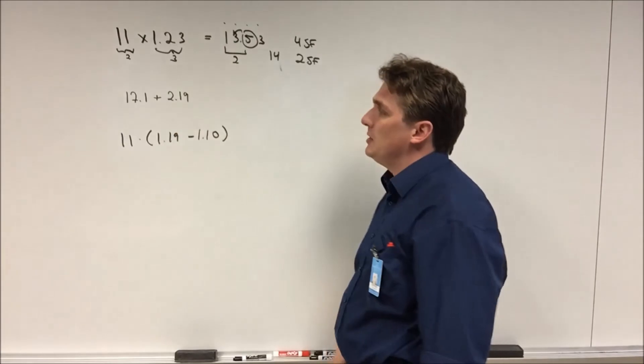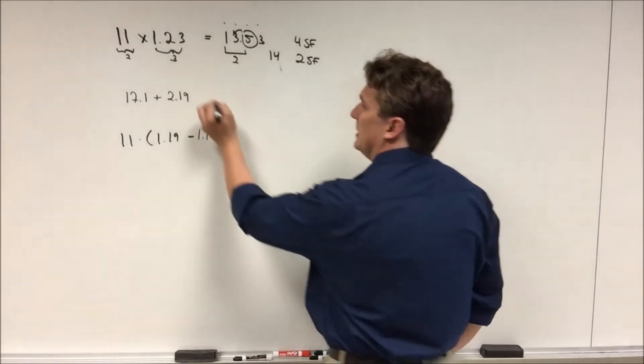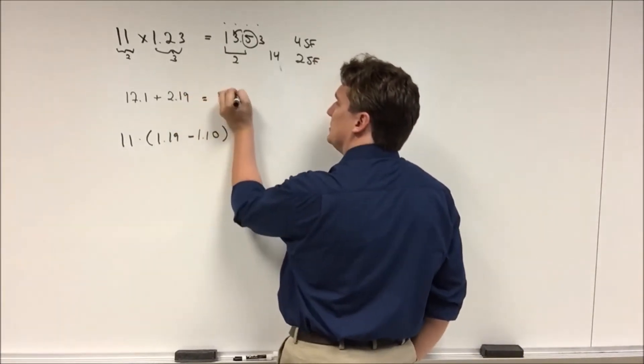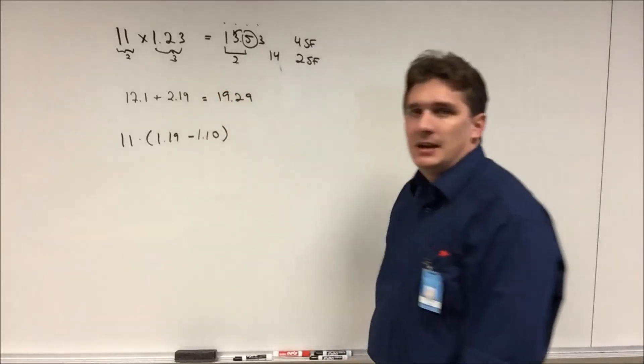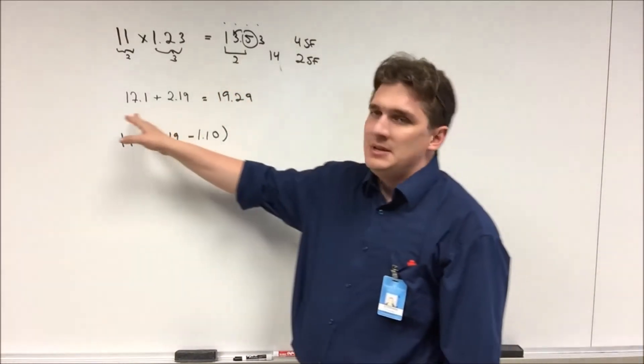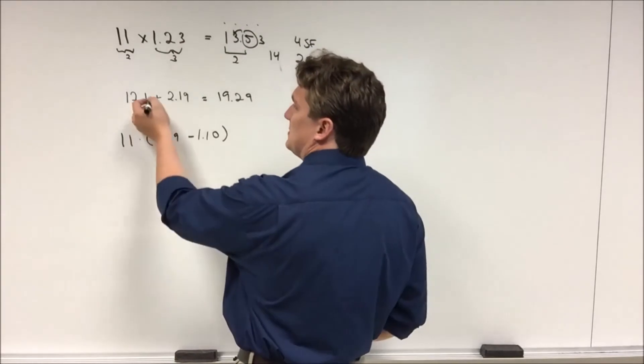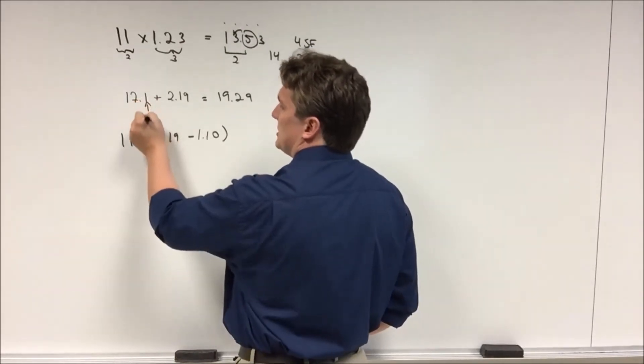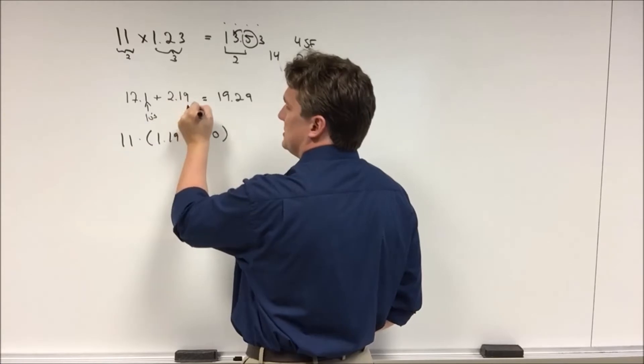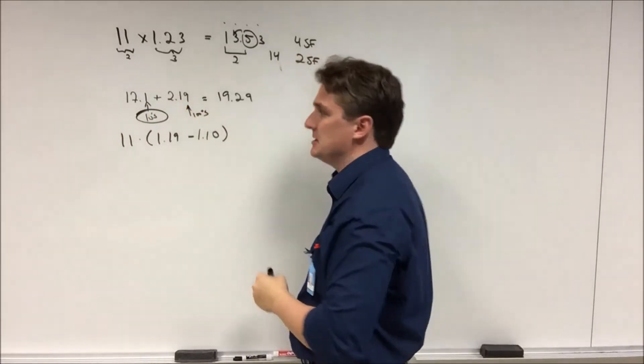Let's say you have 17.1 plus 2.19. This is going to give you 19.29. In this case it doesn't matter how many significant figures you have, it matters what the least precise decimal point is. So in this case you're precise to the tenths, in this case you're precise to the hundredths, so this is going to be our limiting scenario.